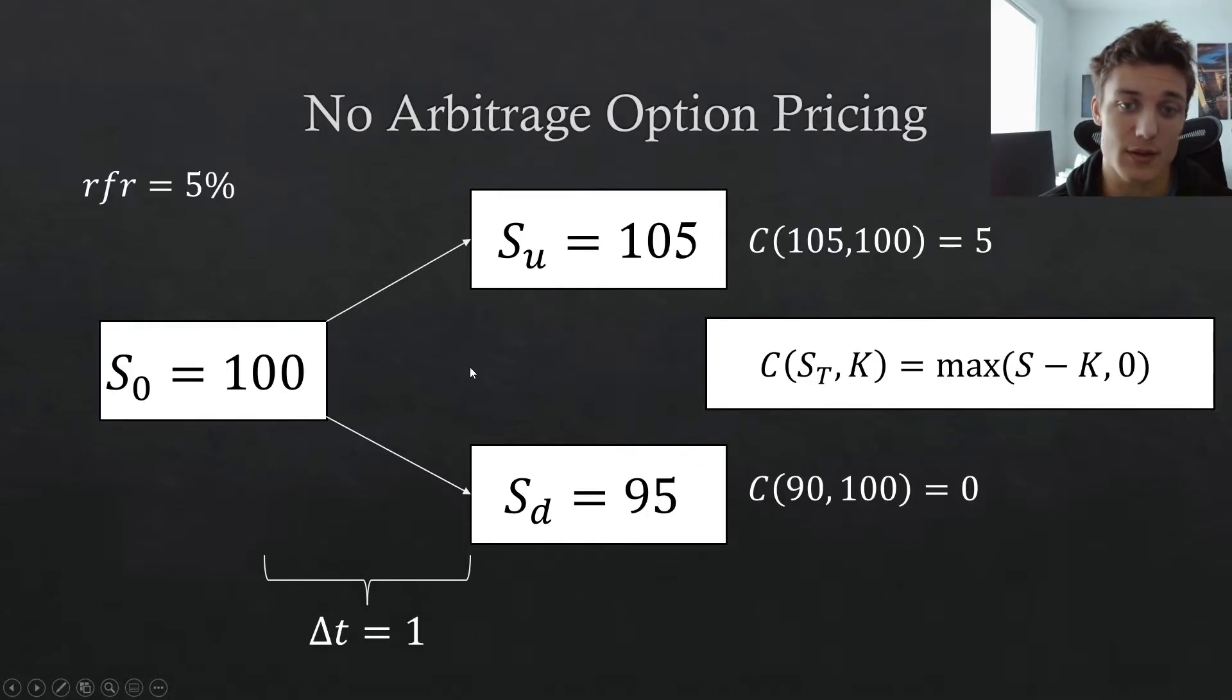Our stock price today, so at this current point in time, is going to be 100. And after one step, so we'll just say that this is one year delta t, we have two states of the world, very similar to the previous example we worked with in the other episode, where we have this up state where the stock price increases to 105, and we have this down state where the stock price decreases to 95.